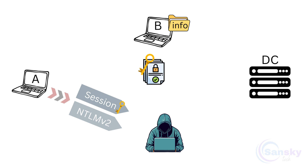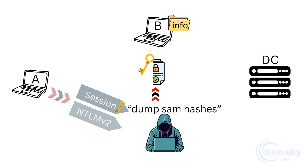The attacker modifies the original request — instead of accessing the info shared folder as A intended, the attacker now requests B to dump the SAM hashes. The attacker encrypts and signs these malicious requests using A's session key, making them appear legitimate to B, then forwards the modified request to B, impersonating A with valid credentials.